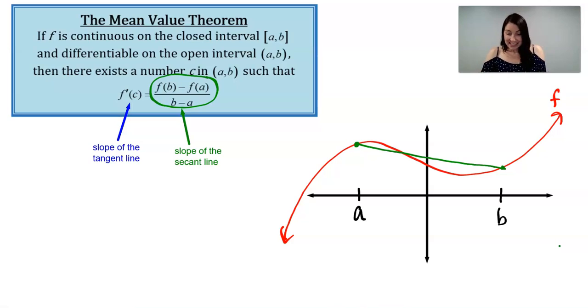So somewhere between a and b, there exists some c value such that if I draw in the slope of the tangent line, those two will be equal to each other. So let's take a look at an example.